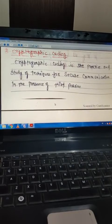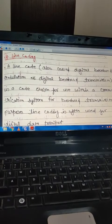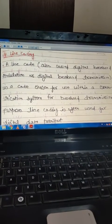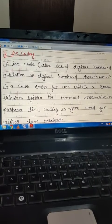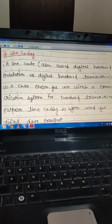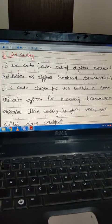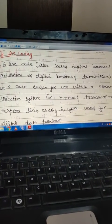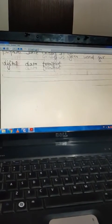And finally is line coding. Line coding, also called digital baseband modulation or digital baseband transmission, is a code chosen for use within a communication system for baseband transmission purposes. Line coding is often used for digital data transport.